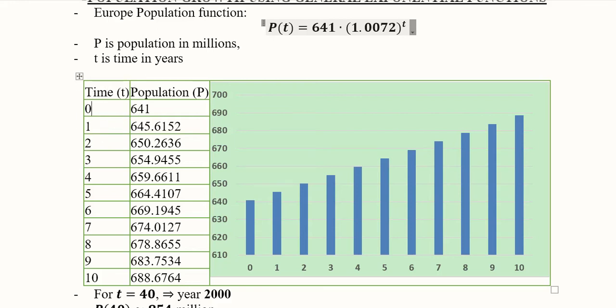So we start the time period from 0, that is now, and we take it to for example 10 years. Then we can put the value of t here and find out various values of P. So all these values are found. You can experiment with other values as well. This is the graph after using these values.